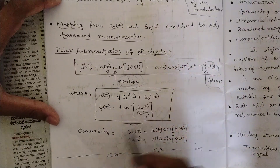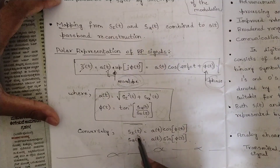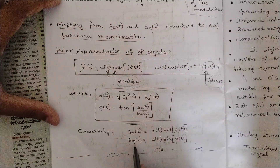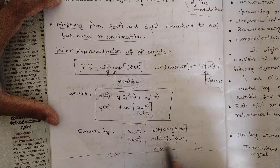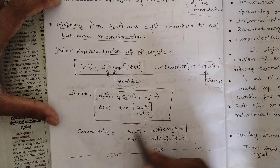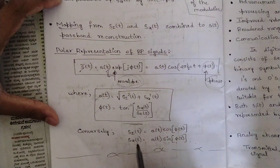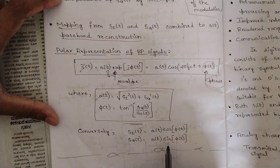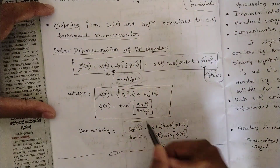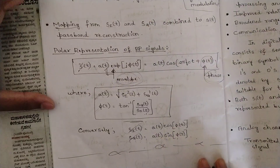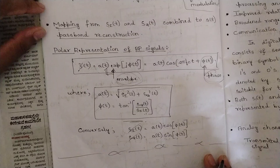The envelope is given by the equation A(t) = √(s_i²(t) + s_q²(t)) and the phase component by φ(t) = tan⁻¹(s_q(t)/s_i(t)). Conversely, the in-phase component is s_i(t) = A(t)·cos(φ(t)), and after elimination the quadrature phase component s_q(t) = A(t)·sin(φ(t)), since these two are inversely proportional to each other. That is all about the polar representation of band pass signals.